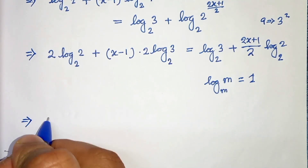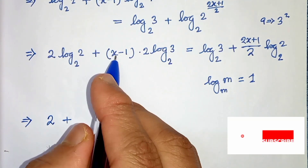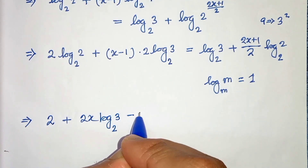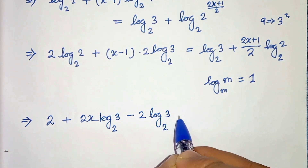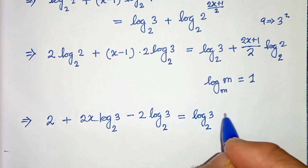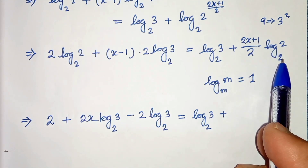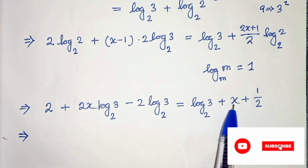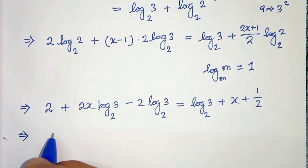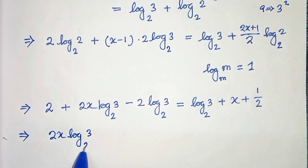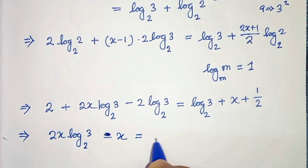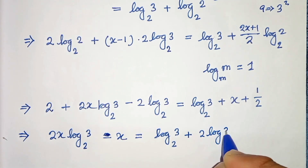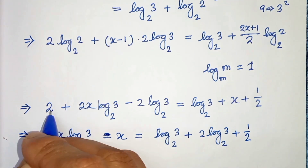So we get: 2 plus 2 times x minus 1 times log of 3 to base 2, which expands to 2x log of 3 to base 2 minus 2 log of 3 to base 2, and this equals log of 3 to base 2 minus x plus 2x over 2 which is x, plus 1 over 2 which is one half. Now rearranging, taking x to the left and the constant terms to the right: 2x log 3 to base 2 minus x equals log of 3 to base 2 plus 2 log of 3 to base 2 plus one half minus 2.